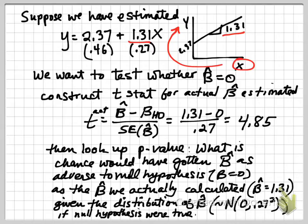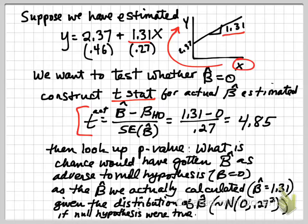We know that β̂, the estimator we have, has a normal distribution, so we can exploit that fact to conduct the test. We construct a t-statistic for the β̂ we've estimated: t = (β̂ − β₀) / SE(β̂), which the regression output gives us. So we have (1.31 − 0) / 0.27 = 4.85.